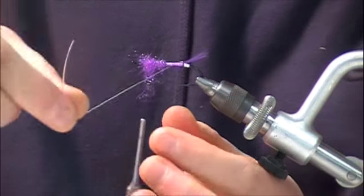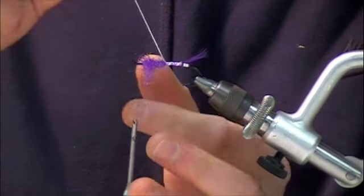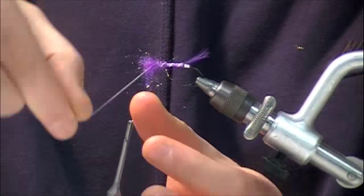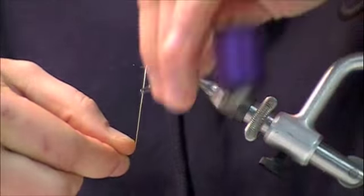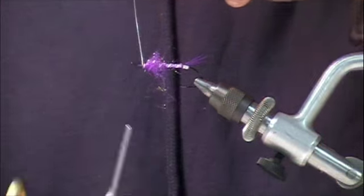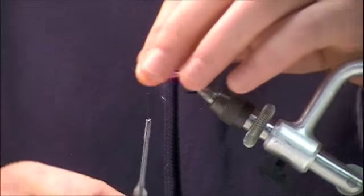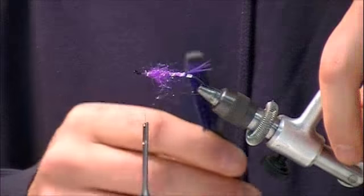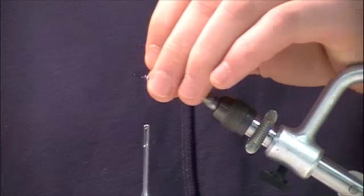We're going to take a second, we're going to rib the body with that oval tinsel. Tie the tinsel off. Make sure that tag is covered. Again, hit it maybe with the dubbing brush, pull some of those fibers out, give it that nice brushy breathing body we all like for steelhead so well.